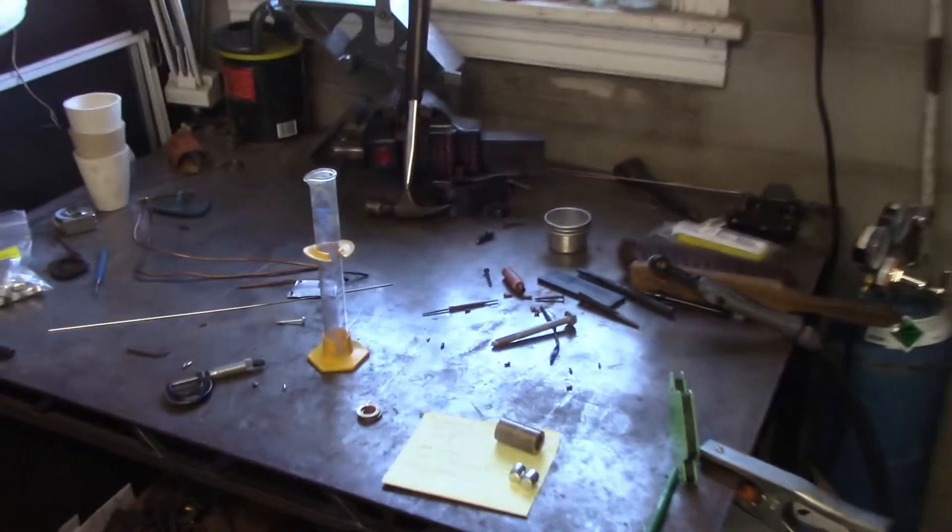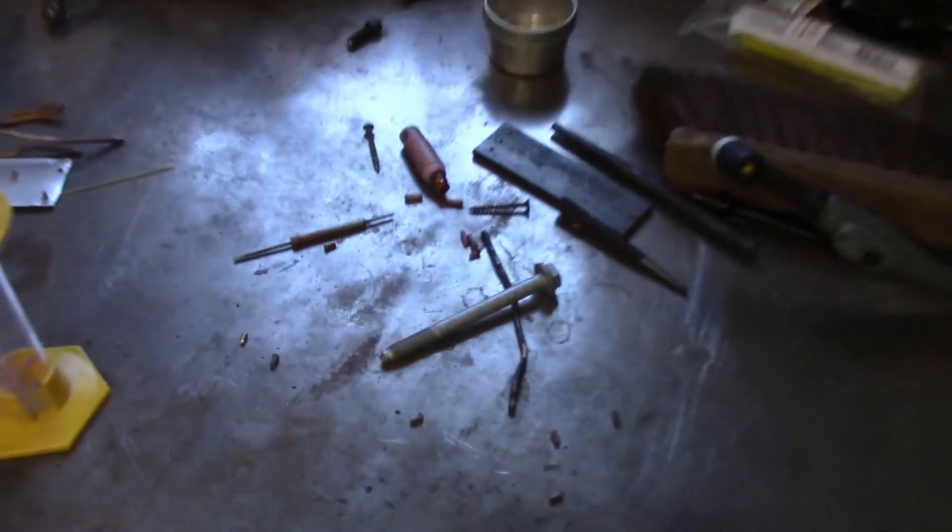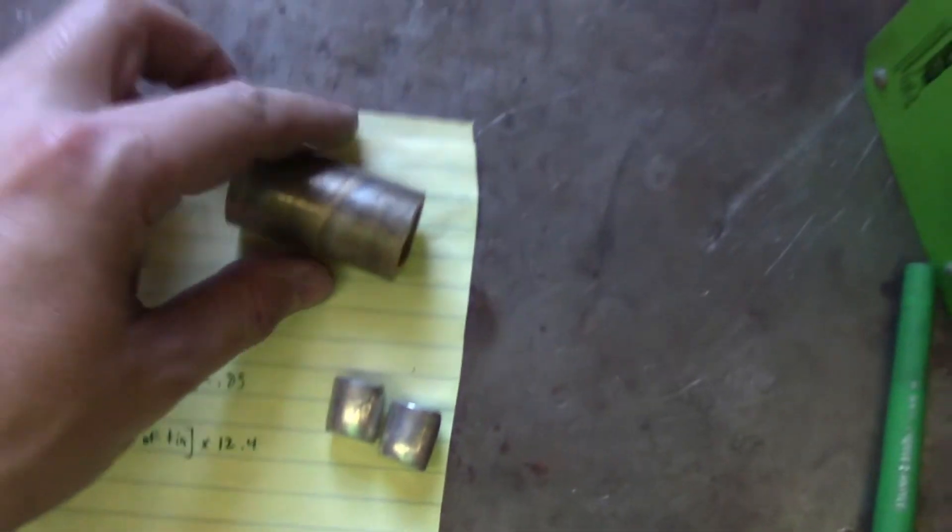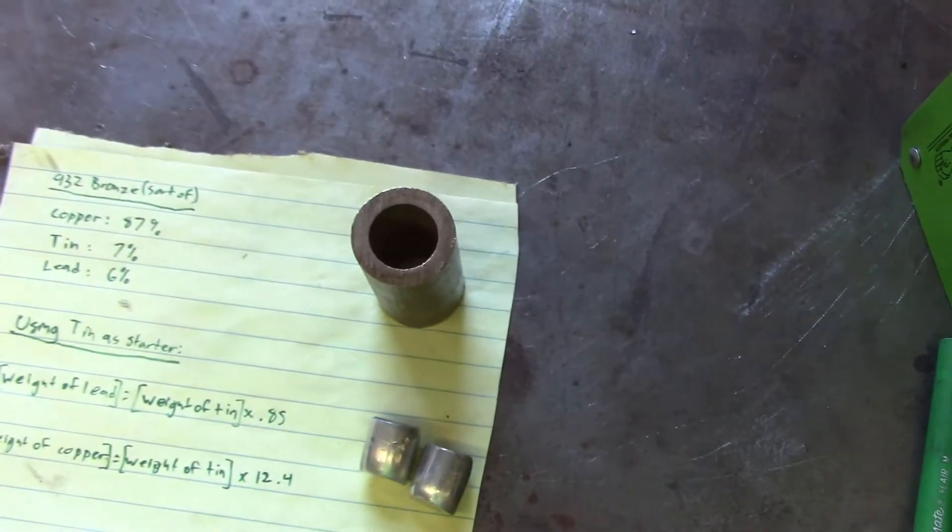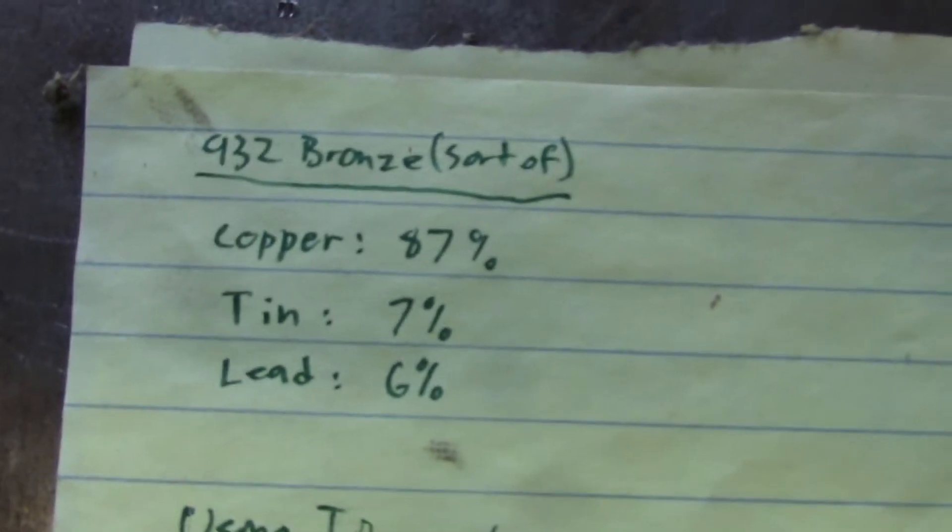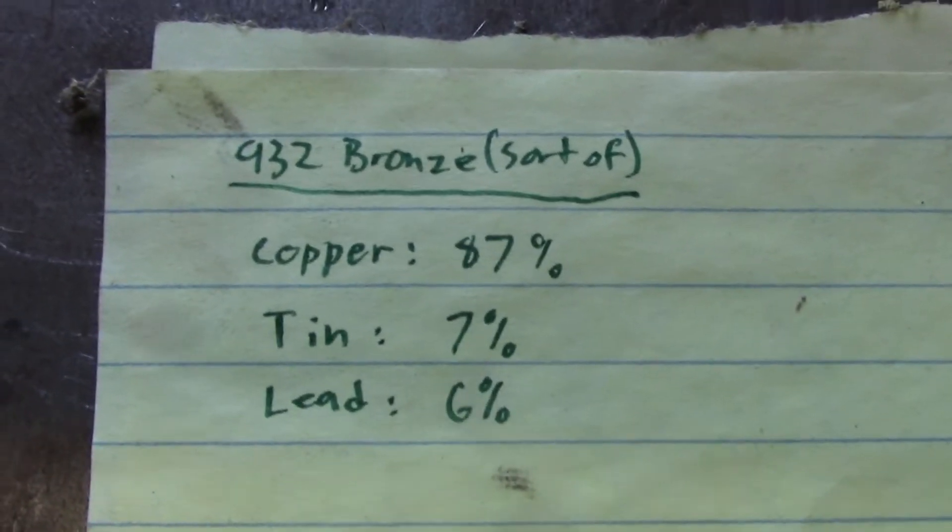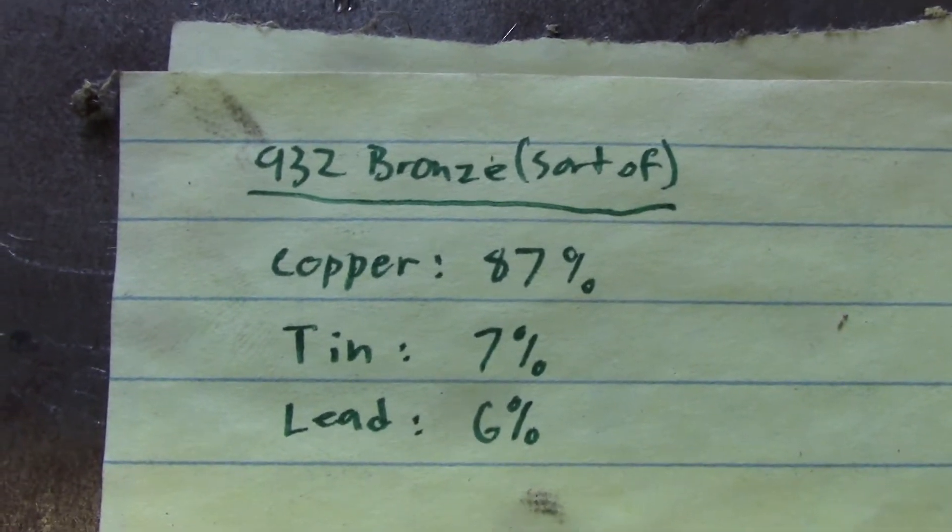This is going to be a pretty quick experiment. I've got this chunk of 932 bearing bronze which has about these proportions. I'm ignoring some smaller constituents because they don't really matter.